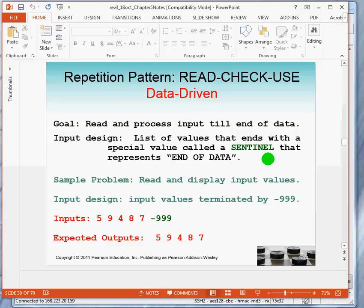The first repetition pattern that's typical of programs is called the read, check, and use pattern. The goal of such a pattern, of programs that follow this pattern, tends to be to read and process input until there is no more input. One way to solve this problem is to design the input in such a way that the list of input values is followed by a special value called a sentinel that really represents the end of data.